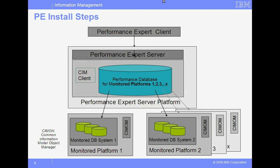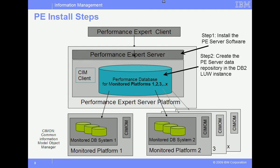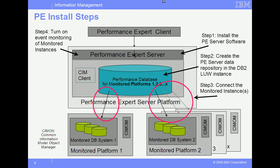The installation steps consist of: Step 1, installing the PE Server software; Step 2, create the PE Server Data Repository — a two-phase process; Step 3, connect up the monitored servers and add the monitored databases — also a two-phase process; Step 4, turn on any DB2 for LUW event monitoring; and Step 5, start the PE Server.